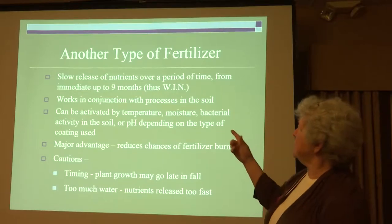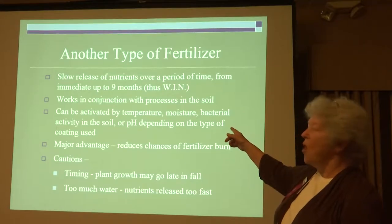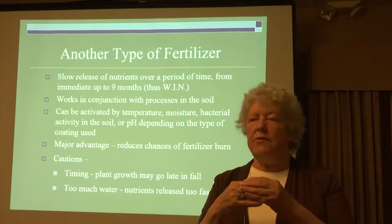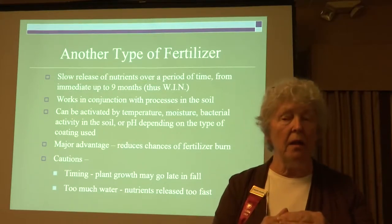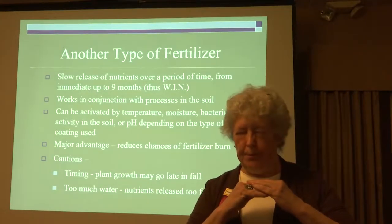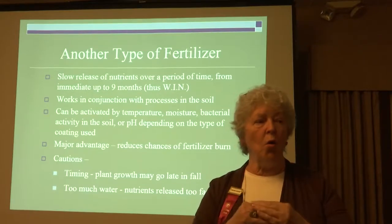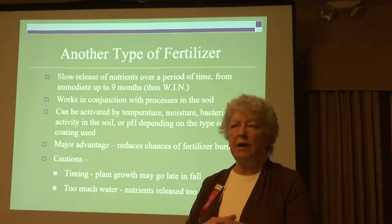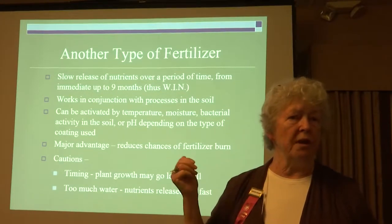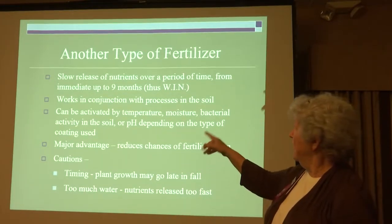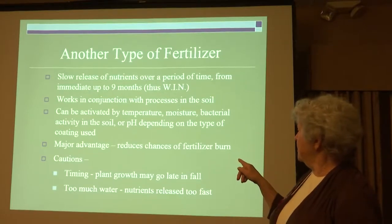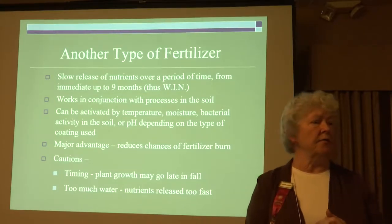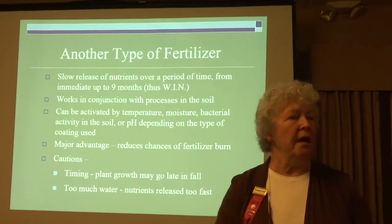Other types of fertilizer: slow-release pellets. These contain water-insoluble nitrogen because the casing doesn't dissolve. They're activated by warm, moist soil with lots of bacterial activity — not cold, not dry, and not where you don't have healthy microorganisms. The major advantage is it reduces the chance of fertilizer burn because it only leaks out a little at a time. The other advantage is the gardener doesn't have to go out very often — just put it in March and think you're done until October. Maybe, maybe not.